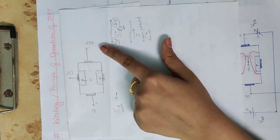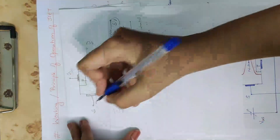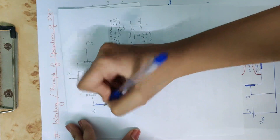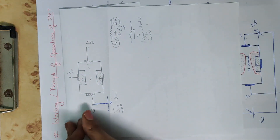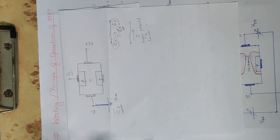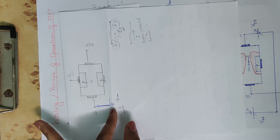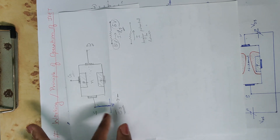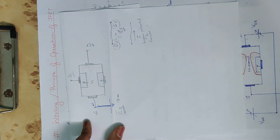We are grounding the source. The source terminal is what we call grounded — this is what we call the common source configuration, similar to the common emitter configuration in BJT. So the source is at zero volts.